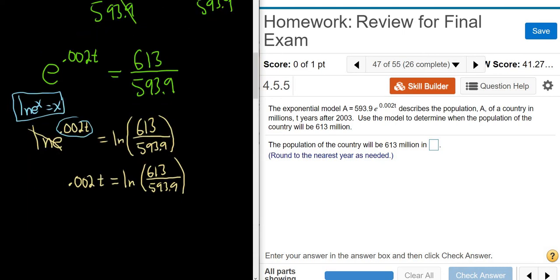Almost done. We just have to divide by .002. So t is going to be equal to the natural log of 613 over 593.9, and all of that is divided by .002.